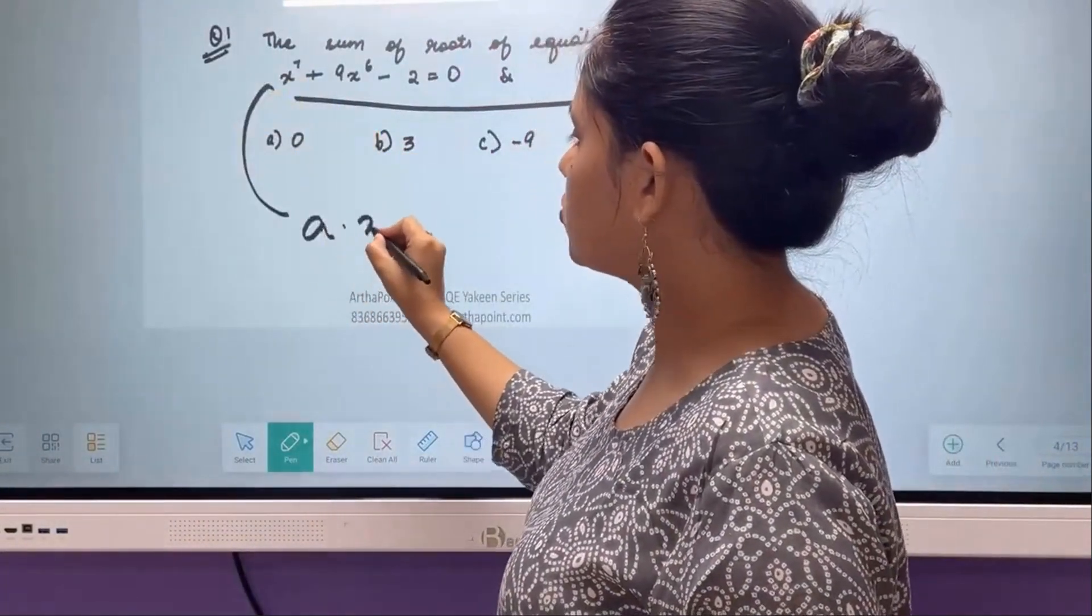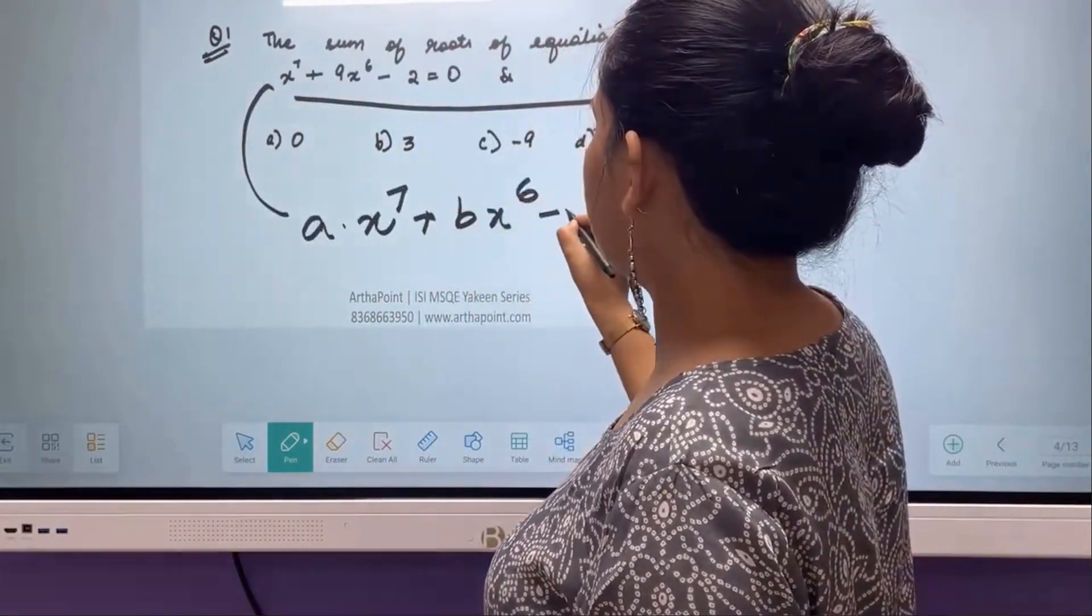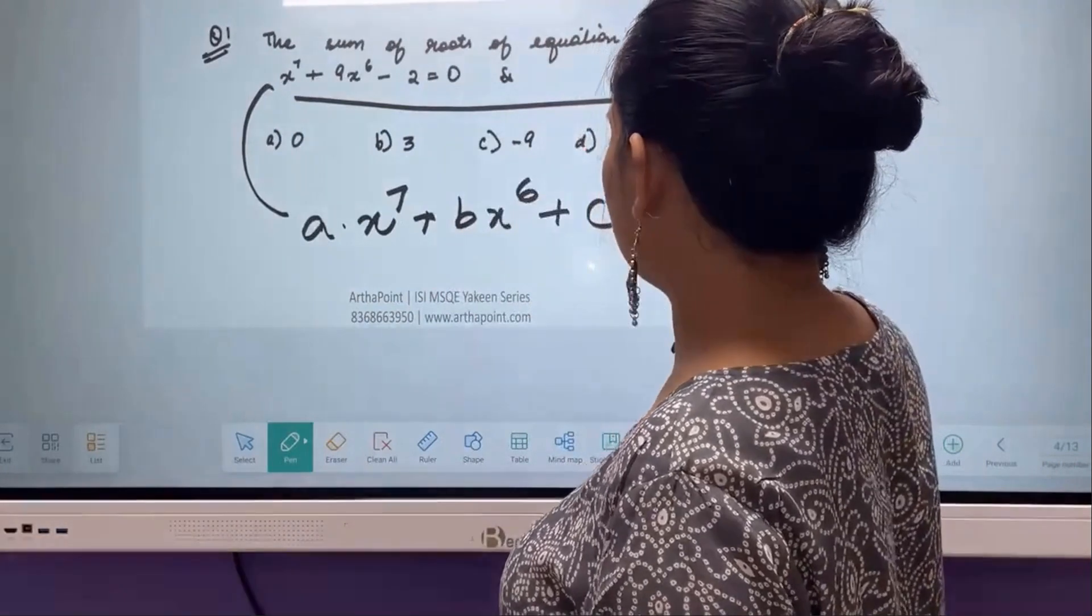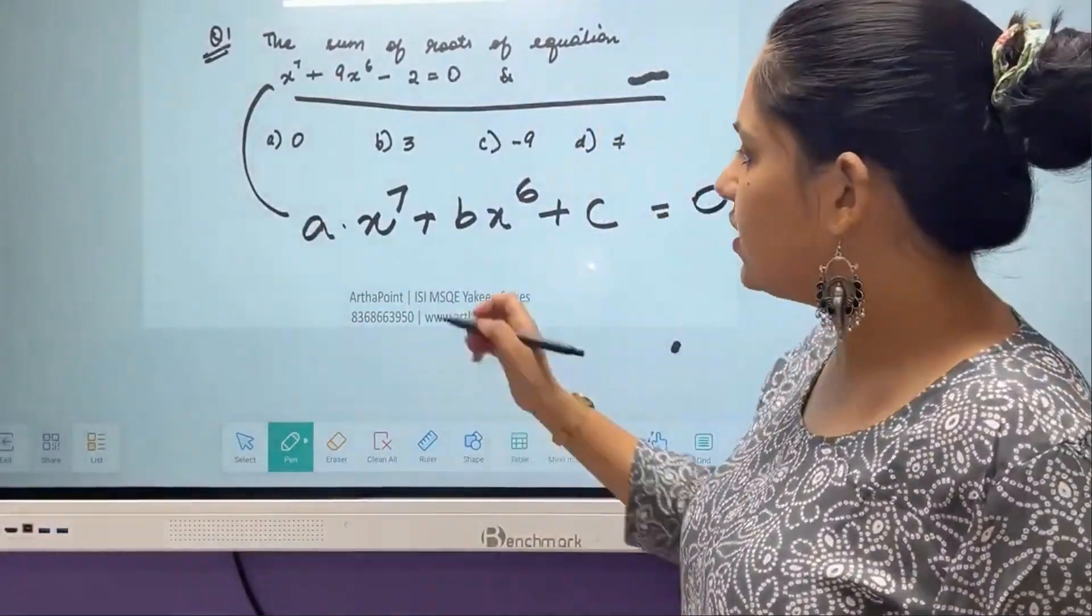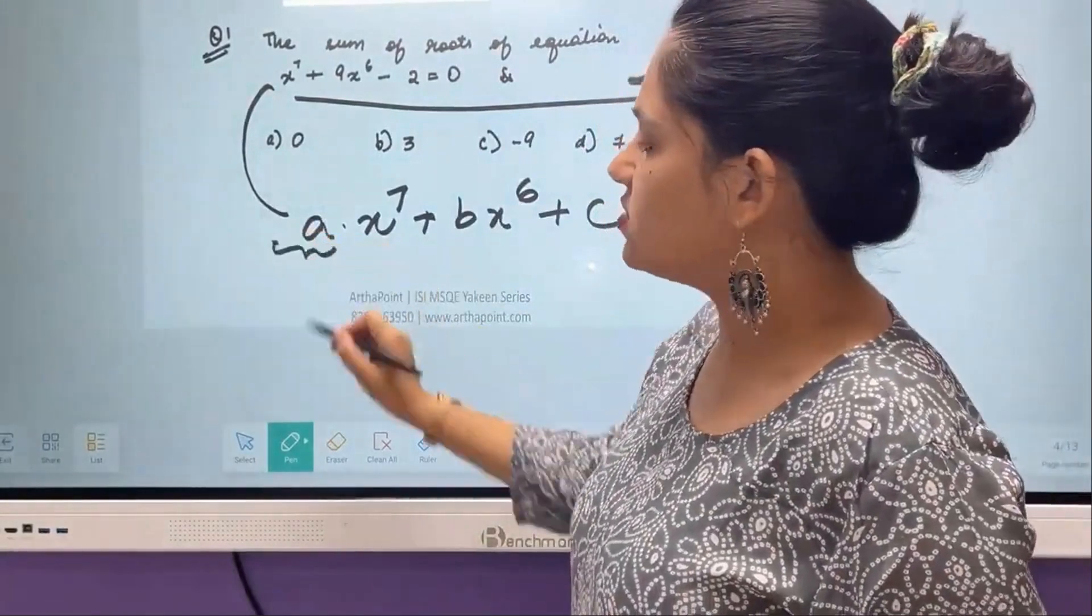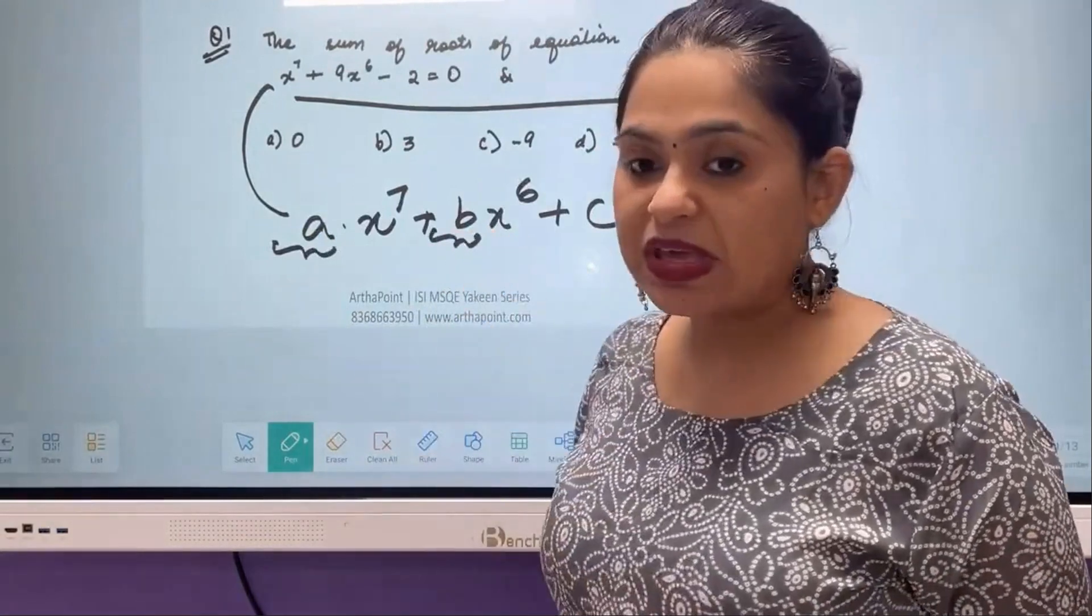A x to the power 7 plus B x to the power 6 plus C is equal to 0. So when I look into the coefficients, I understand that the coefficient of x to the power 7 is A, the coefficient of x to the power 6 is B.